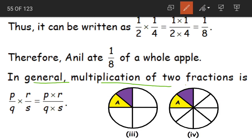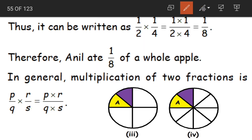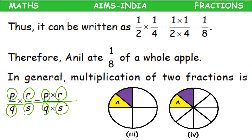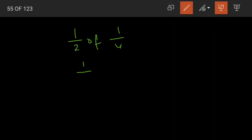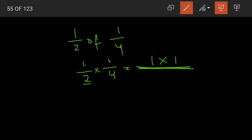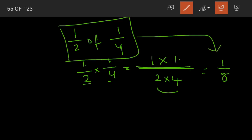In general, multiplication of two fractions P/Q and R/S is equal to P×R divided by Q×S. Multiplication is very easy — we multiply the numerators and divide by the product of the denominators. Here, 1/2 of 1/4 is nothing but 1/2 into 1/4: multiply the numerators, 1 into 1 is 1, divided by multiply the denominators, 2 into 4 is 8. So 1/2 of 1/4 equals 1/8.